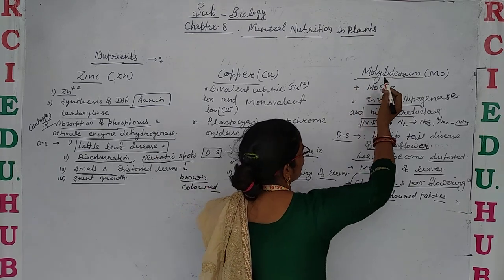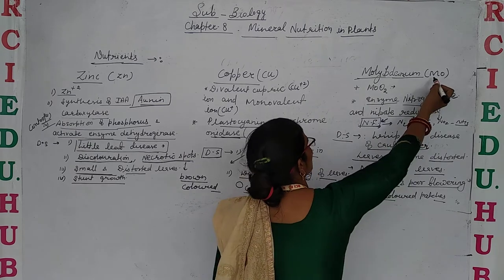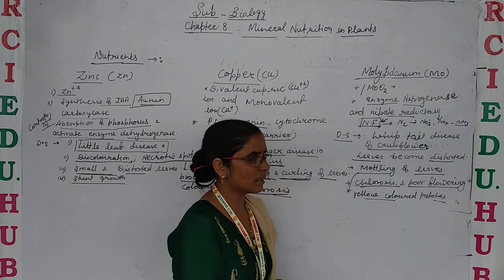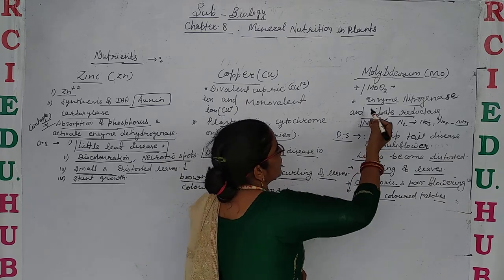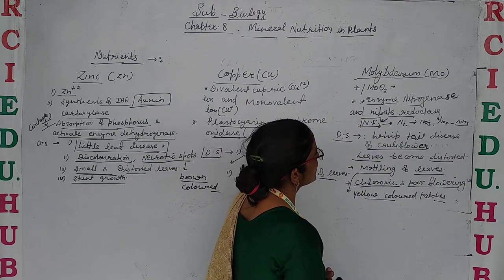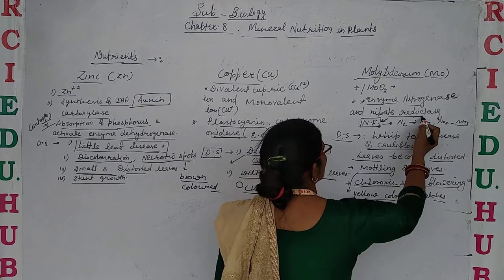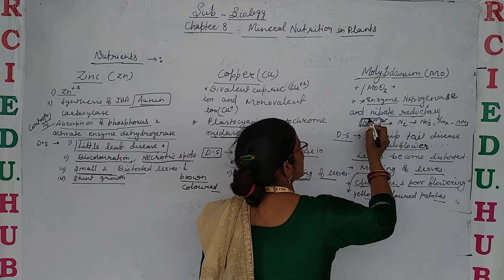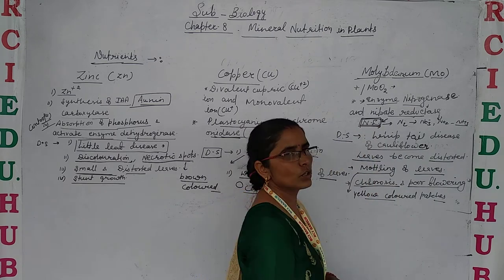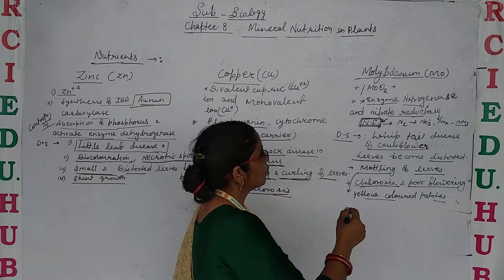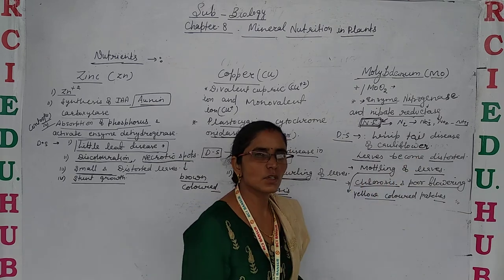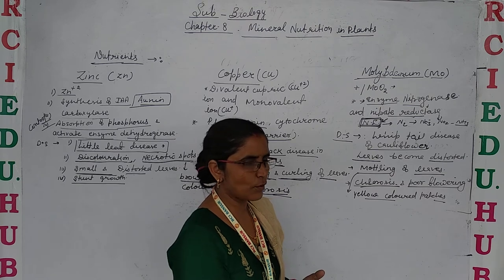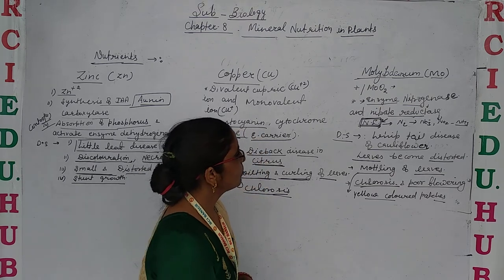Now let's discuss about molybdenum, symbol Mo. It is absorbed by the plants in the form of molybdenum oxides. It is the component of enzymes nitrogenase and nitrate reductase, which are the main components of nitrogen fixation. These enzymes play an important role in nitrogen fixation, which is the process of fixing atmospheric nitrogen into a usable form utilized by the plants.